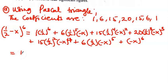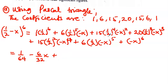The first term gives 1/64. The next term: (1/2)^5 is 1/32, so we get minus 6/32 x. Then (1/2)^4 is 1/16, and (-x)^2 is positive x squared, giving plus 15/16 x squared.